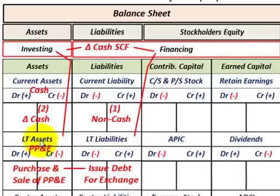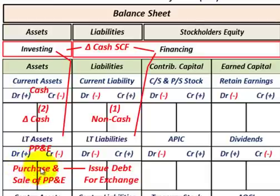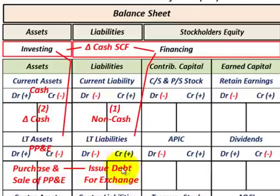When we're talking about our investing activities, we're really talking about long-term assets — that property, plant, and equipment account. First, we're going to look at the purchase of a piece of equipment. Through that purchase, we're not going to directly pay cash. Instead, we're going to issue a bonds payable or debt in exchange for the equipment.